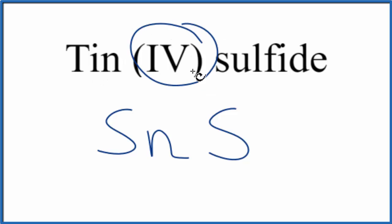And we're even told in the name, tin four, that will have a 4 plus on the tin. The sulfur on the periodic table, that's in group 16, sometimes called 6A, that's always 2 minus here. So these charges need to add up to zero.